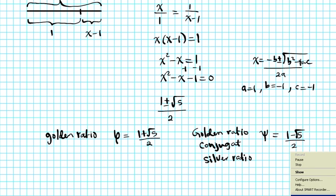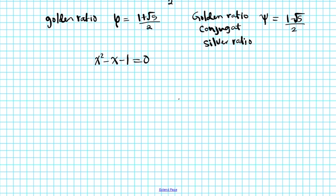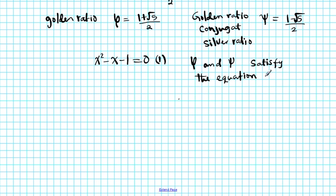So how are the golden ratio and its conjugate, the silver ratio, connected to the Fibonacci sequence? That's what we're going to be deriving in this video. Let's start with the original equation — x squared minus x minus 1 equals 0. We know that phi and its conjugate both satisfy this equation. Let's call this equation 1.